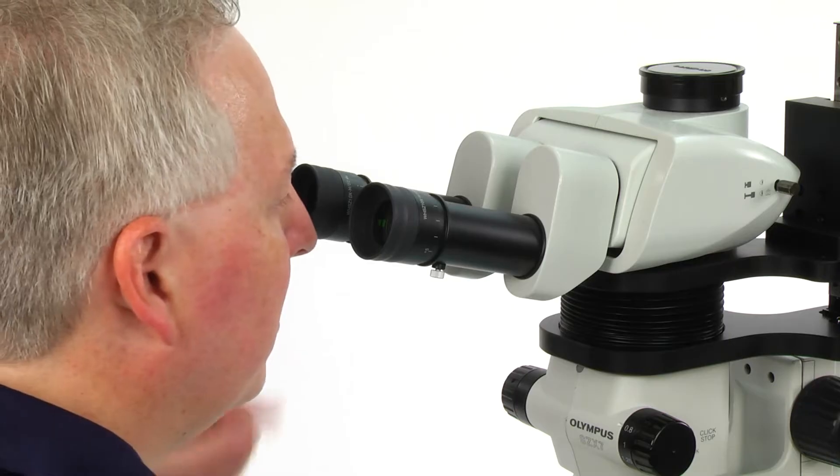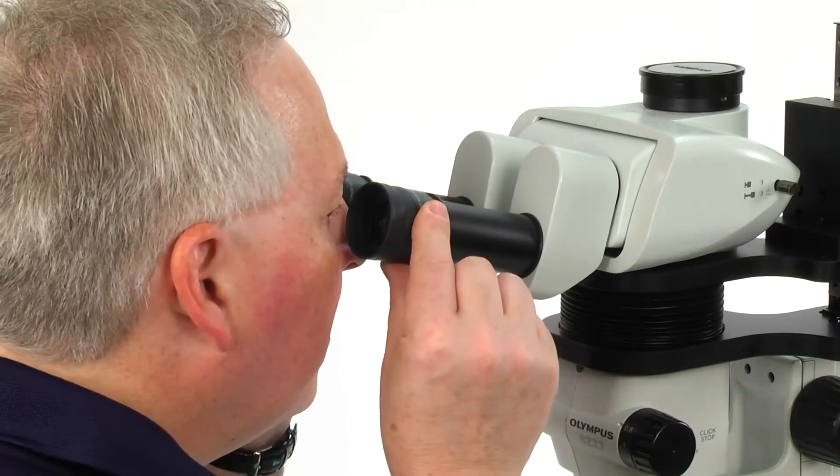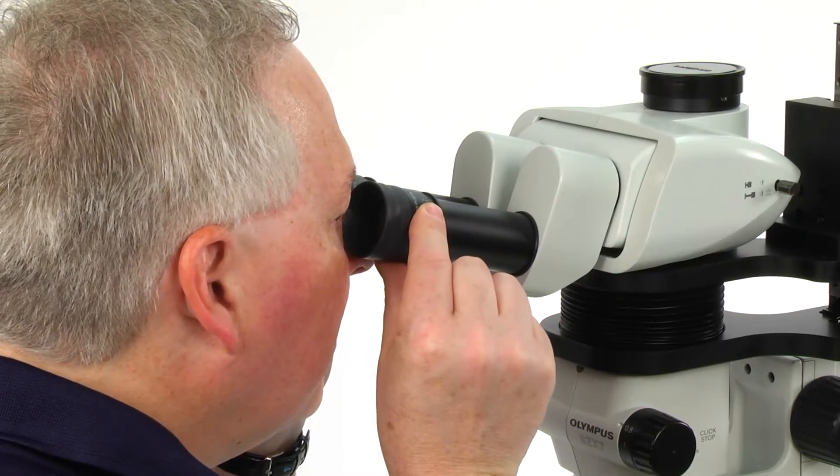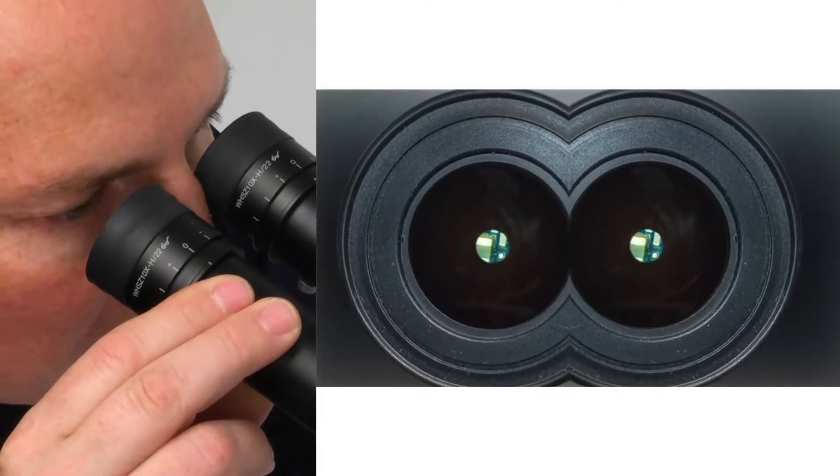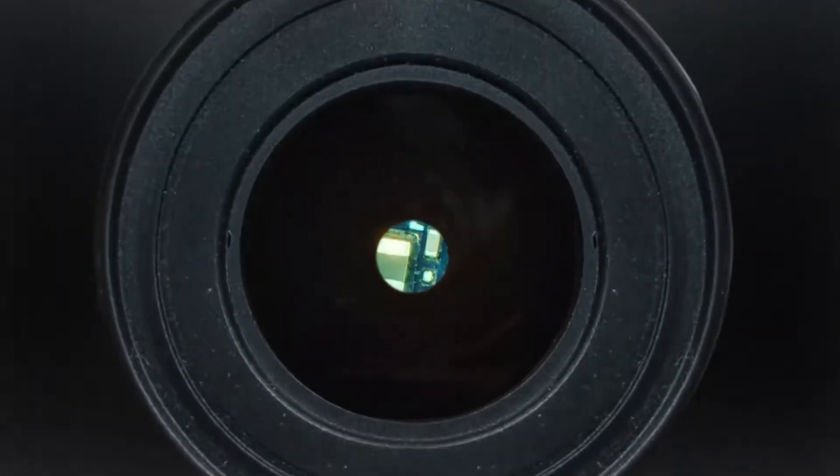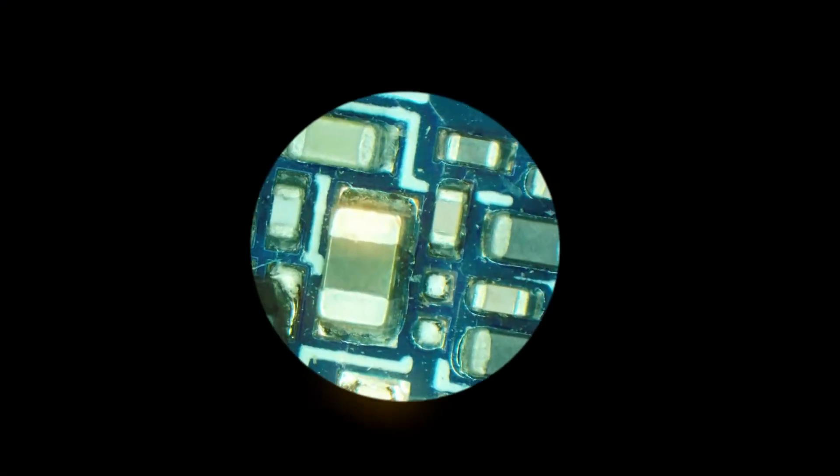While holding the left and right observation tubes with both hands, look through the eyepieces. Adjust for binocular vision by moving the eyepieces together or apart until the left and right fields of view merge to form a single image.